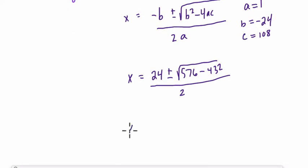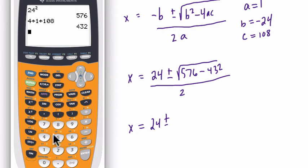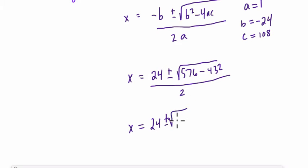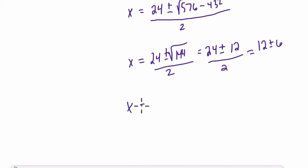So x equals 24 plus or minus, what is 576 minus 432? It's a perfect square, it's 144. So plus or minus the square root of 144 over 2. That just equals 24 plus or minus 12, plus or minus 6 because we divide both terms by 2. So in the first case, x is 12 plus 6. In the second case, x is 12 minus 6. So x is 18 or x is 6.